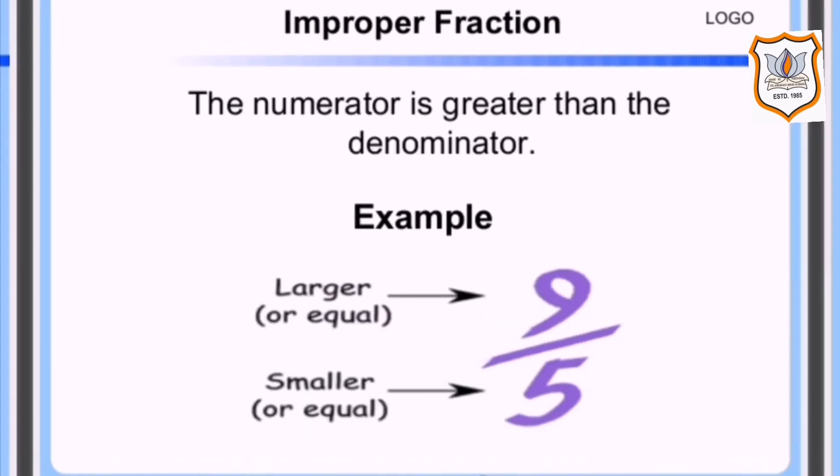Improper fractions. An improper fraction is a fraction where the numerator happens to be greater than the denominator. For example, nine by five, where the numerator is nine and the denominator is five. Nine is larger and five is smaller, so where the numerator is greater than the denominator, it is called an improper fraction.